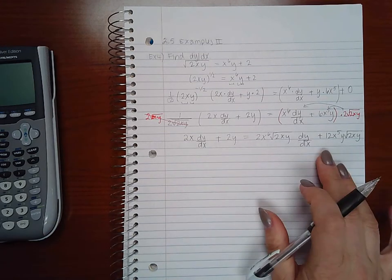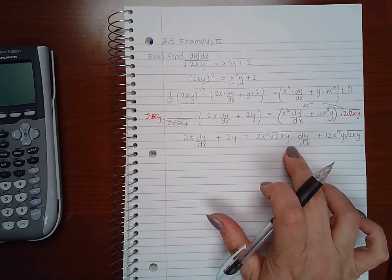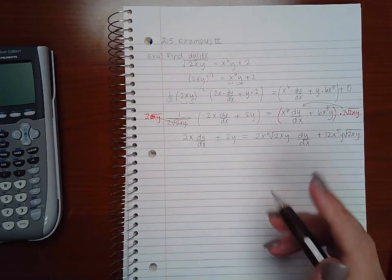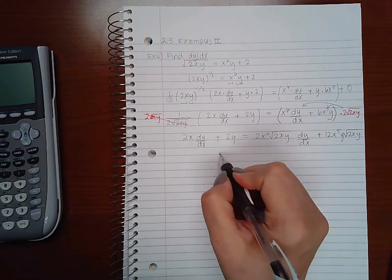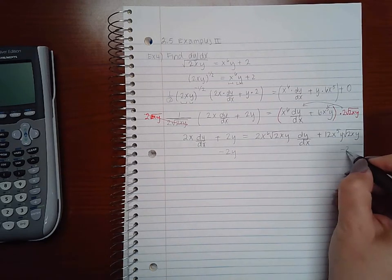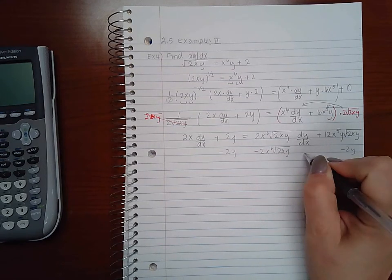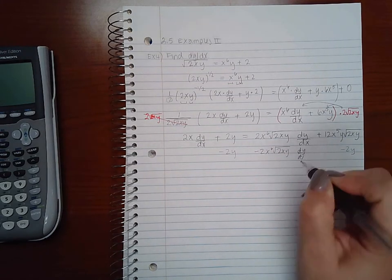Then now we need to move all the terms that have a dy/dx to the left and the terms that do not have a dy/dx to the right. So I'm going to minus 2y from both sides and I'm also going to minus 2x to the 6 square root of 2xy dy/dx from both sides.